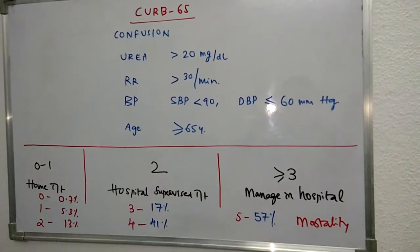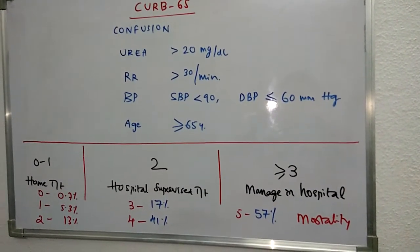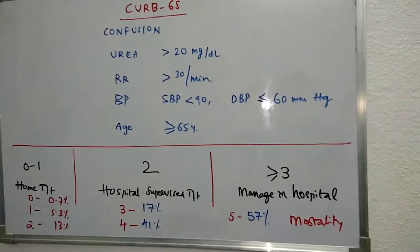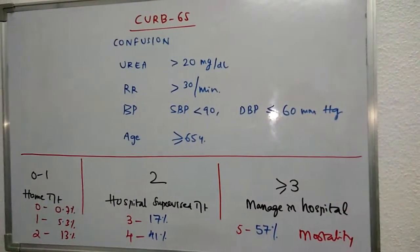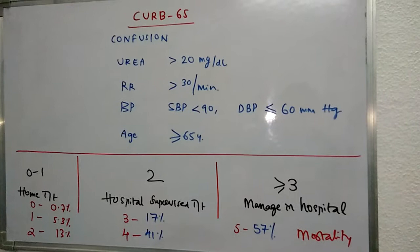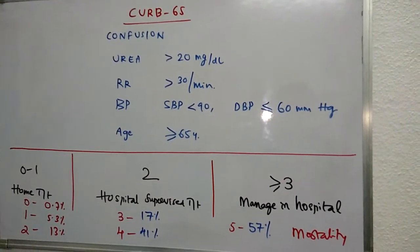The criteria of CURB-65 include confusion, which can be demonstrated with a simple disorientation test. The patient is asked whether they are oriented to time, place, and person.